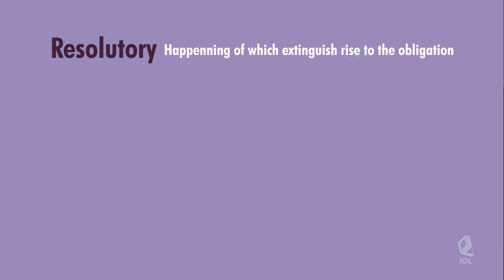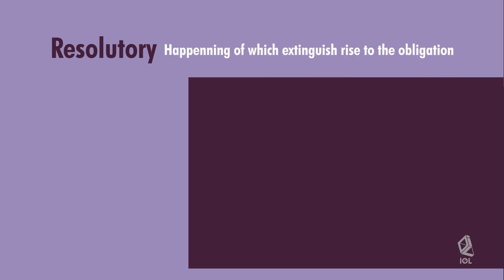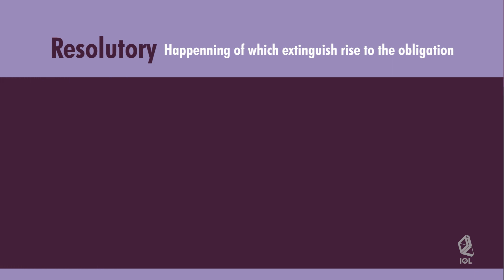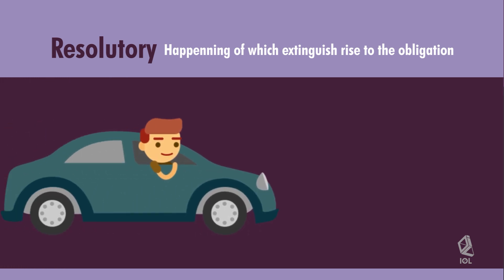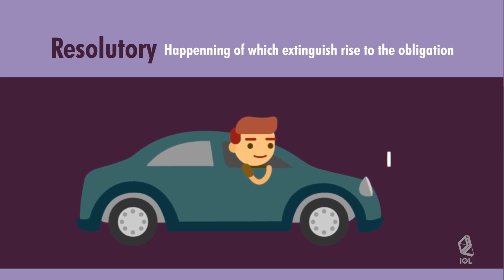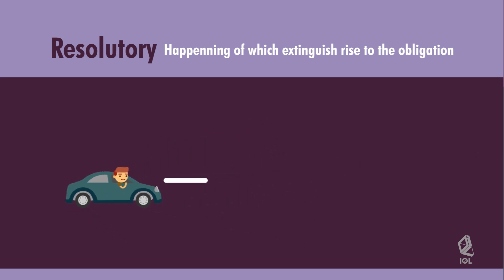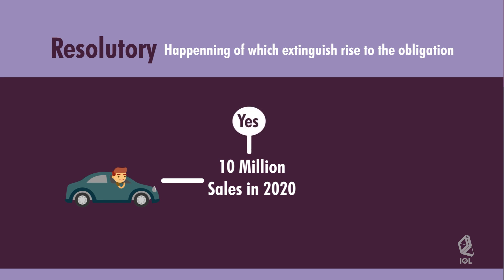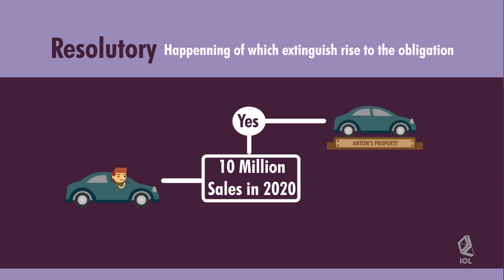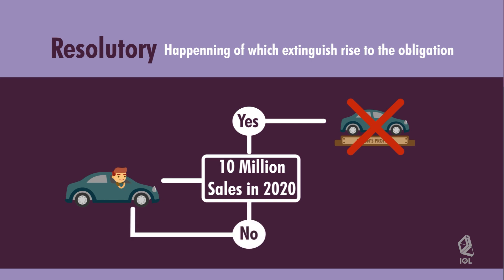In a resolutory condition, the happening of which shall extinguish or terminate the obligation. For example, Anton agreed that Henry shall use Anton's car until Henry is able to reach 10 million pesos in sales. Upon the happening of the condition — achieving 10 million pesos in sales — the obligation of Anton to lend his car to Henry shall be terminated. Here the obligation is demandable at once but shall be extinguished upon the occurrence of the condition.